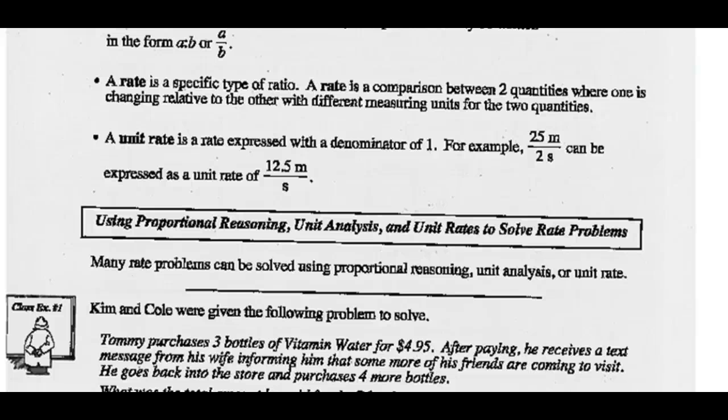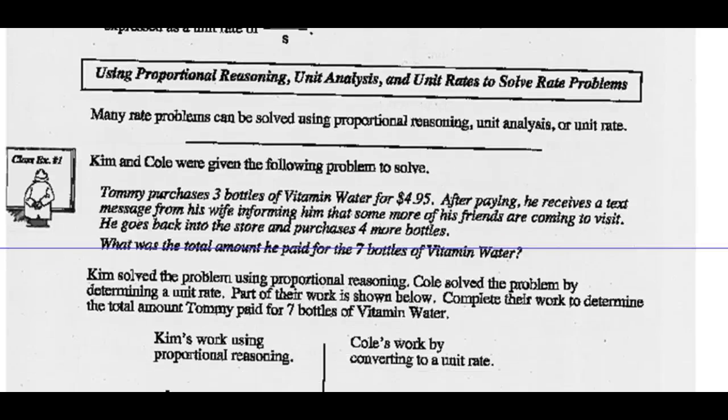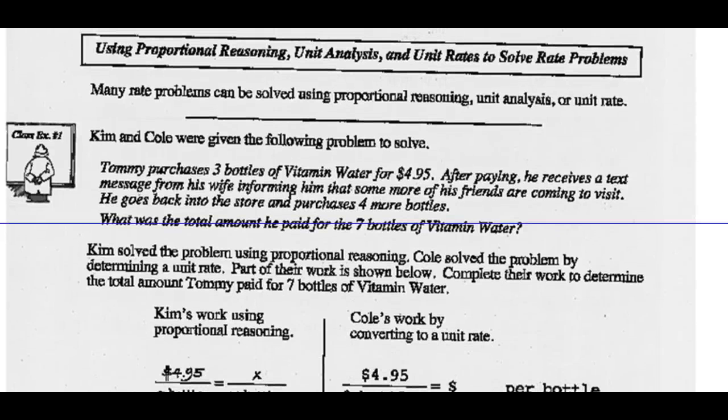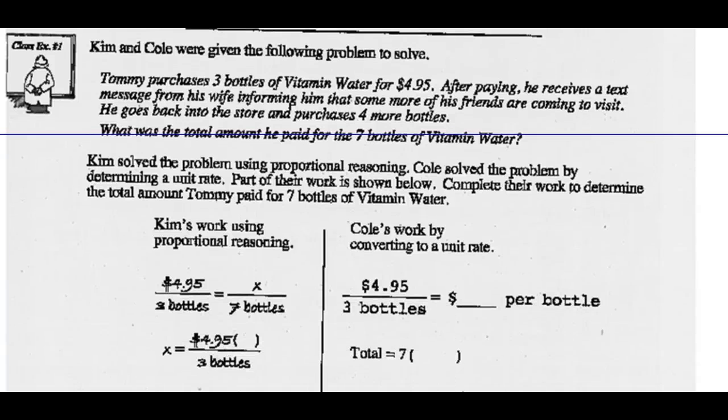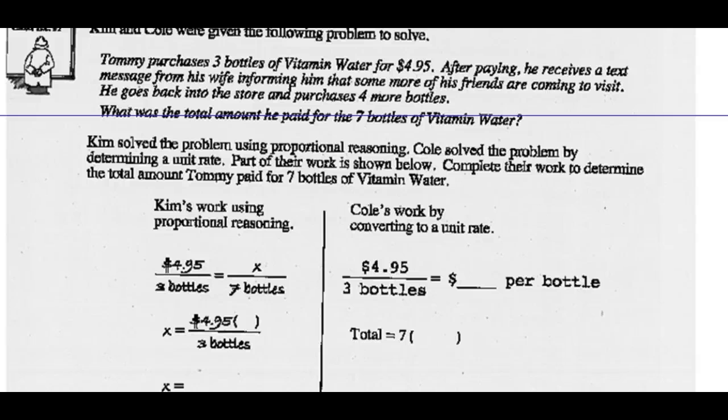Using proportional reasoning, unit analysis, and unit rates to solve some rate problems. Many rate problems can be solved using proportional reasoning or unit analysis or unit rates. Kim and Cole were given the following problem to solve. Tommy purchases three bottles of vitamin water for $4.95. After paying, he receives a text message from his wife informing him that some more of his friends are coming to visit. He goes back into the store and purchases four more bottles. What's the total amount he paid for the seven bottles of vitamin water?